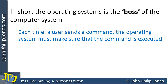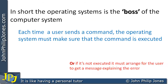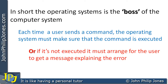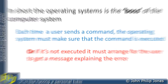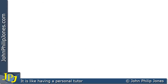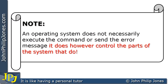Each time a user sends a command, the operating system must make sure that the command is executed, or if it's not executed, it must arrange for the user to get a message explaining the error. An operating system does not necessarily execute the command or send the error message to the user; it does, however, control the parts of the system that do.